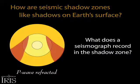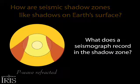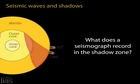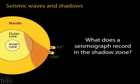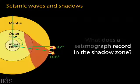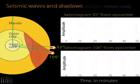So what does the seismograph record in the shadow zone? First we look at just the direct and surface wave arrivals to two seismic stations — one outside the shadow zone and one inside the shadow zone.